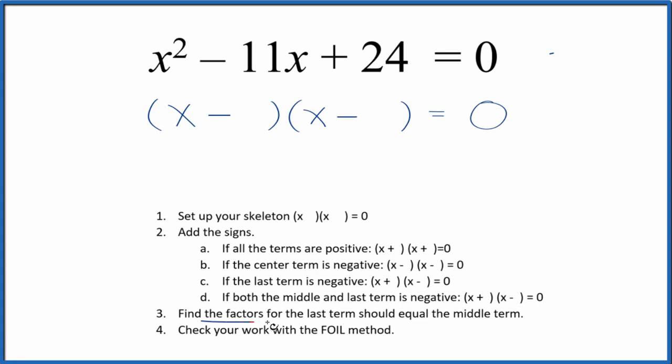Once we've done that, we're going to find the factors for the last term, that's the 24, and they need to add up to the middle term. So let's list the factors for 24. I could see that 3 times 8 gives me 24. 3 plus 8 will give me the 11. So I'm going to put a 3 here and an 8 here, and we're done.